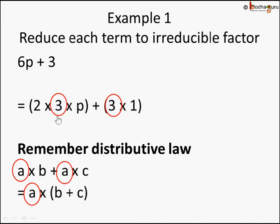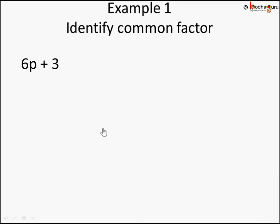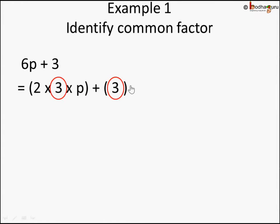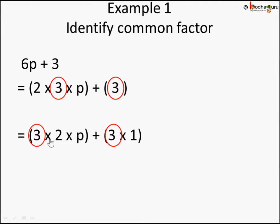We can apply the same distributive law here. We can see 3 is common. So 6p plus 3 is where we started, and we came to this step: 2 into 3 into p plus 3 into 1. Now 3 is common. You may be thinking — what did I do here? By the commutative law, 2 into 3 into p can be written as 3 into 2 into p, because a into b equals b into a. I wrote it this way so you can clearly see that 3 is now the first common factor.